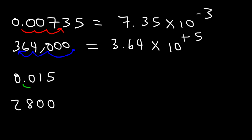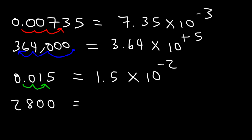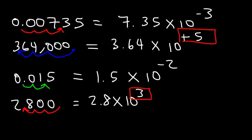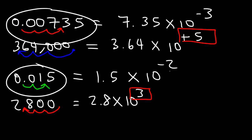The next example is a small number — moving only two spaces gives 1.5 times 10 to the minus 2. The last example is a large number, moving three spaces to the left, giving 2.8 times 10 to the 3. Anytime you have positive exponents, it's always associated with large numbers; small numbers between 0 and 1 are associated with negative exponents.